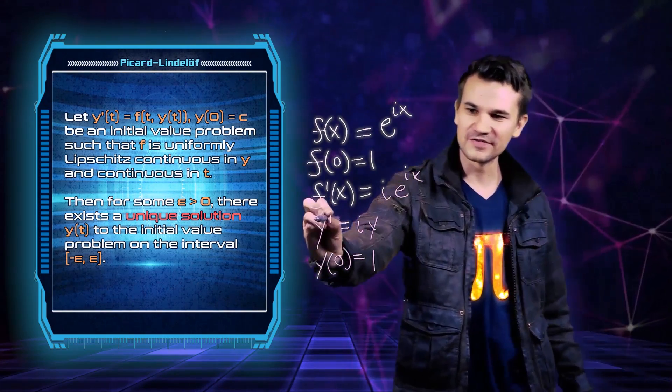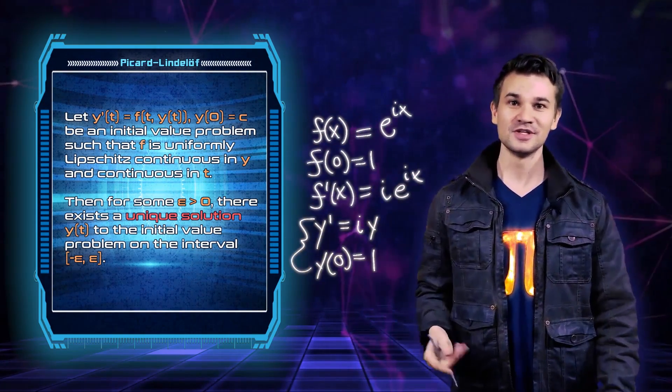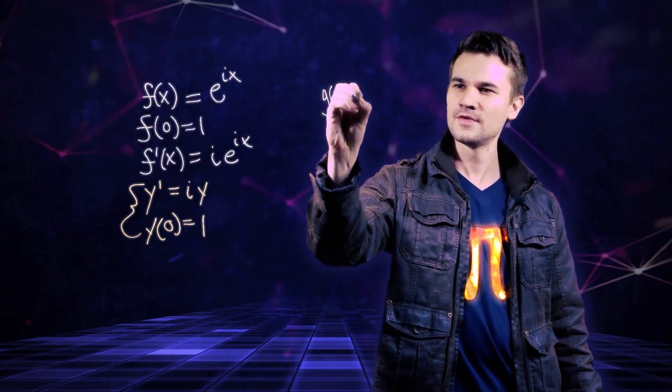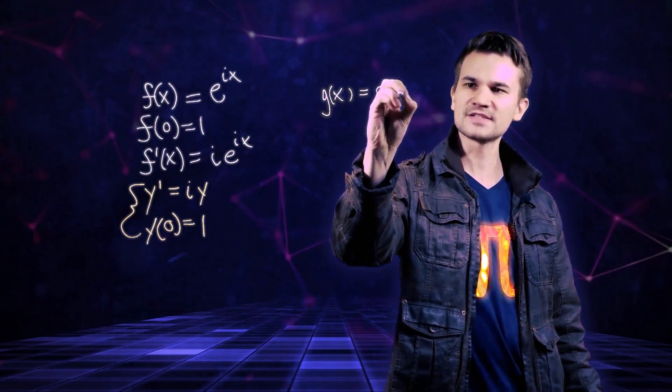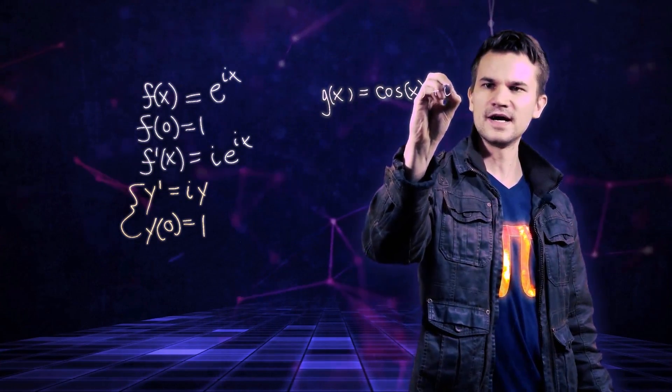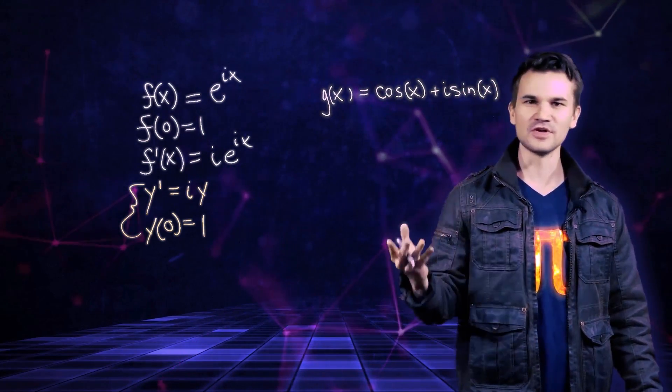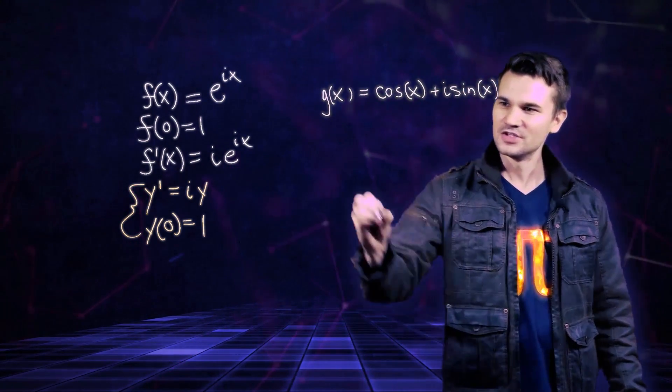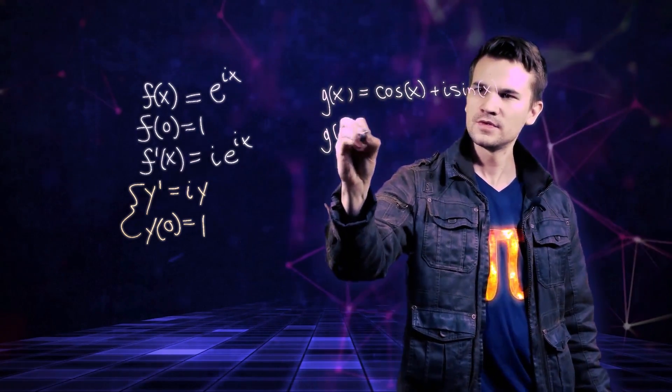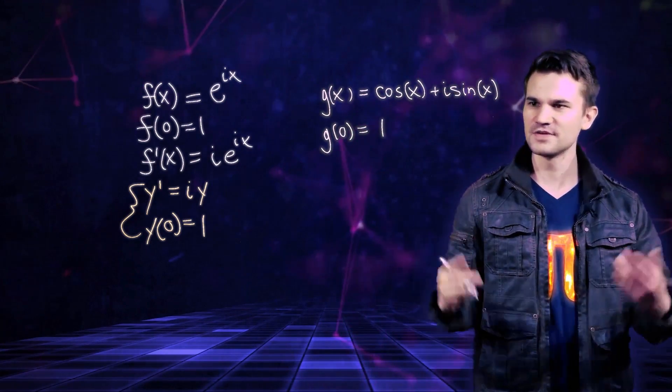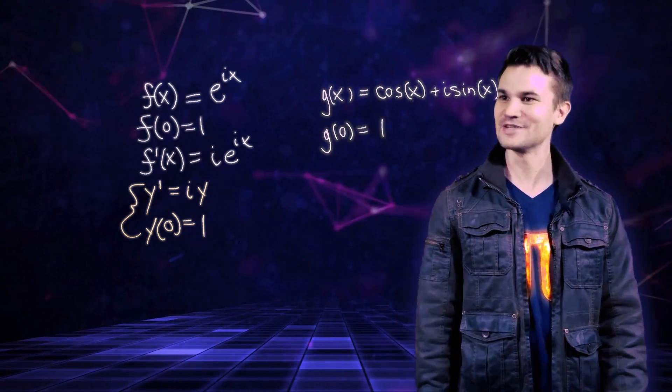Okay well let's see, let's let g of x be cosine of x plus i sine of x. Okay now first of all, let's handle the initial condition. g of 0, cosine of 0 is 1, sine of 0 is 0, so we have the initial condition that's met.